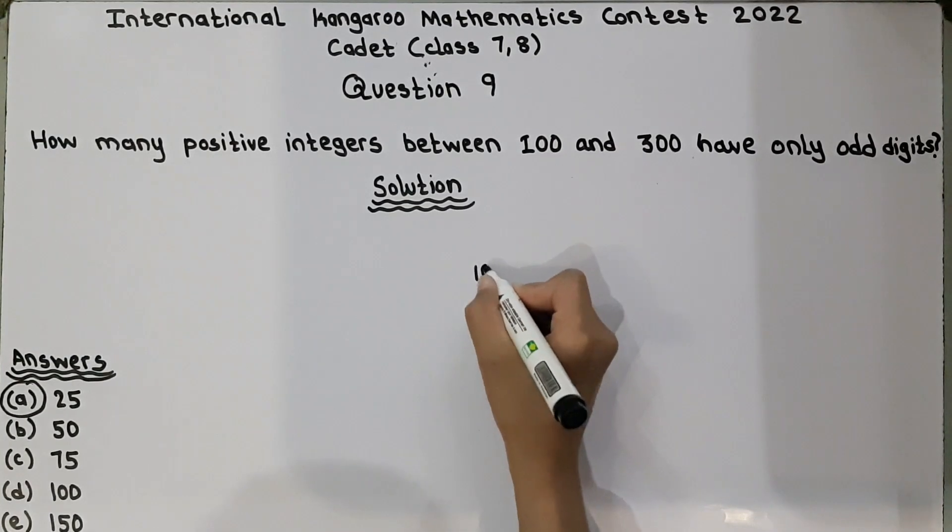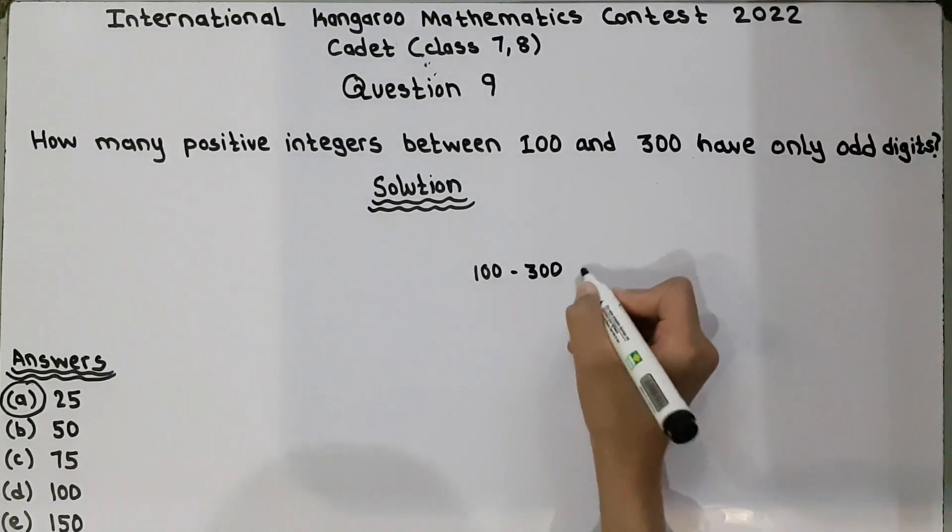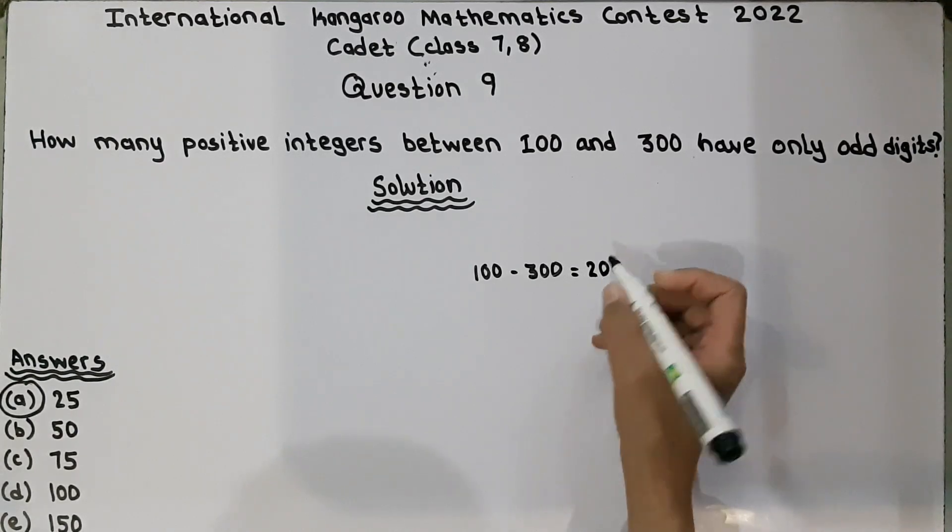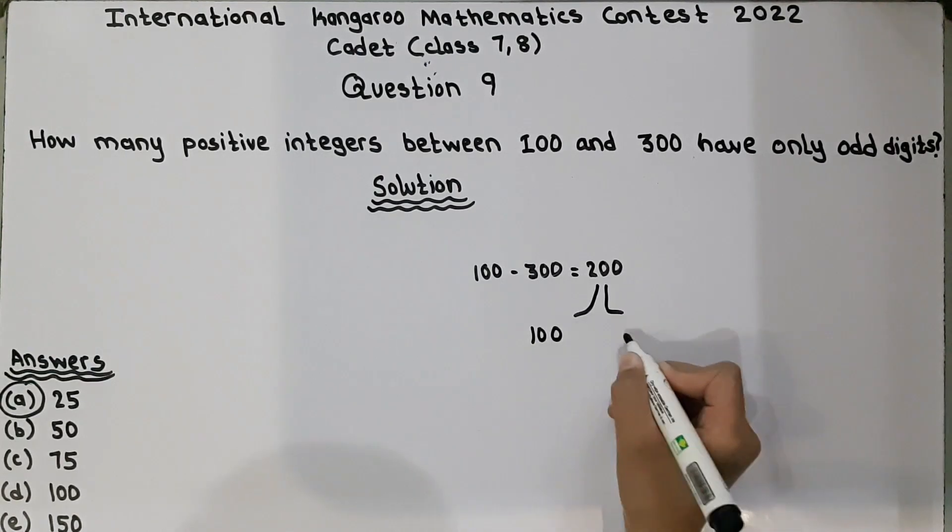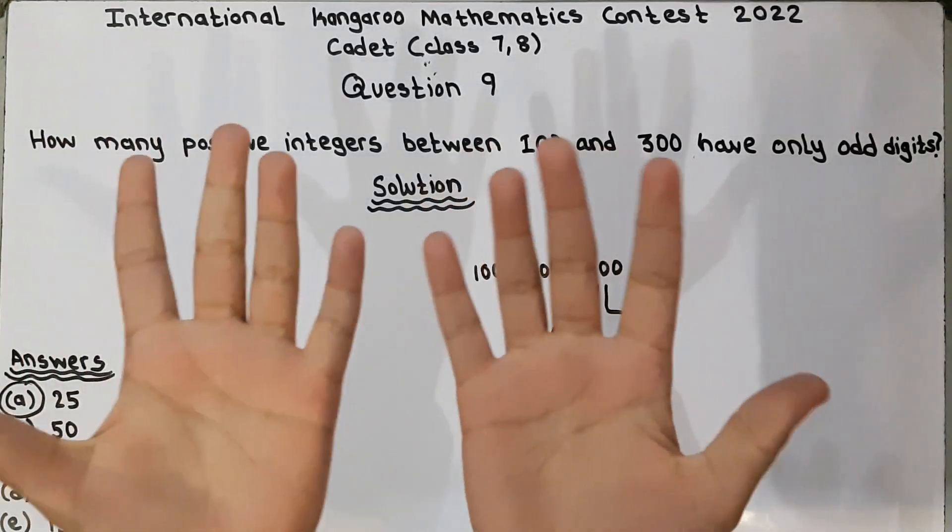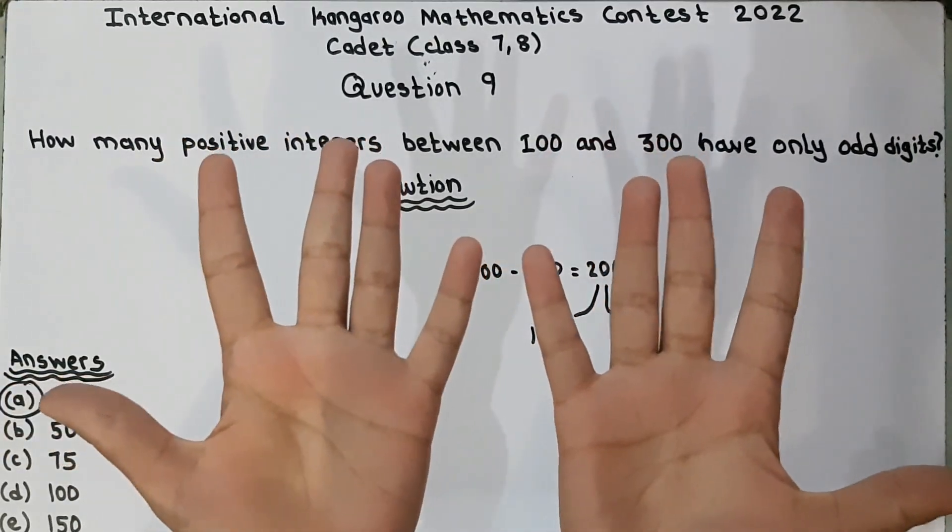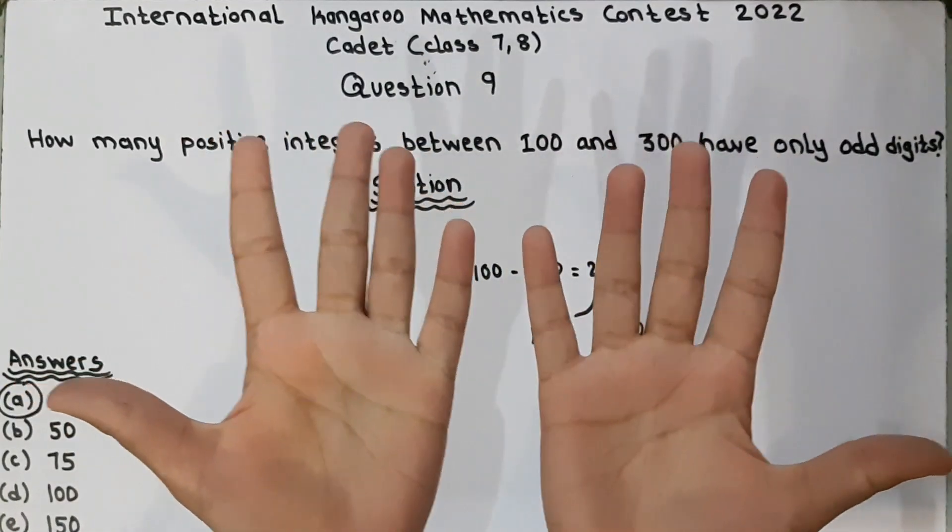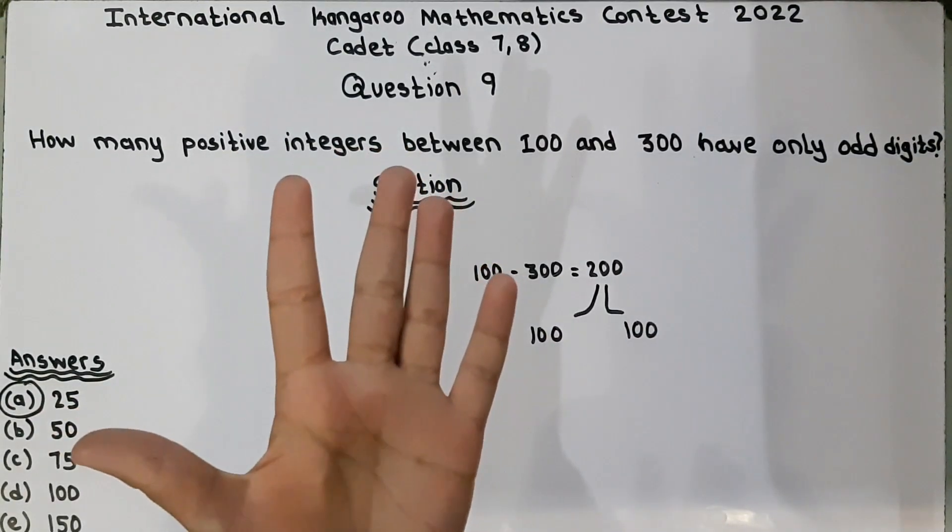So we know that between 100 and 300 there are 200 digits, and these 200 digits we can divide them into 100 digits and 100. Now if we use our hands, we can use our hands to solve this question. These 10 fingers represent a whole 100. This one finger represents 10 and this whole hand represents 100. And one hand contains 5 even digits and 5 odd digits.